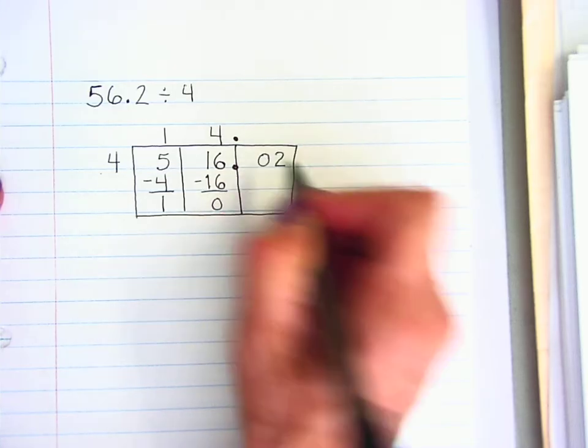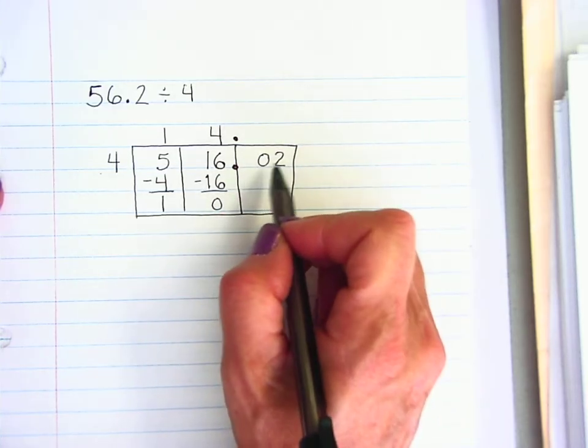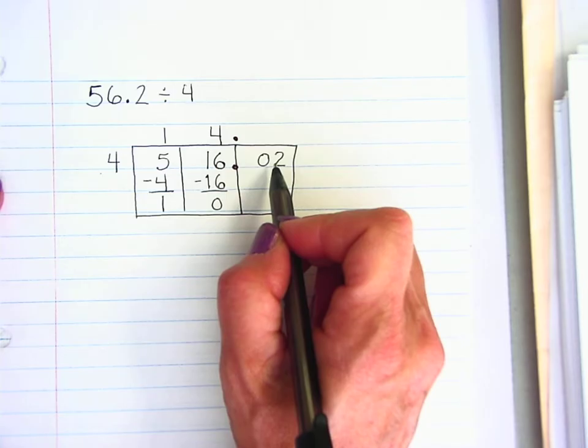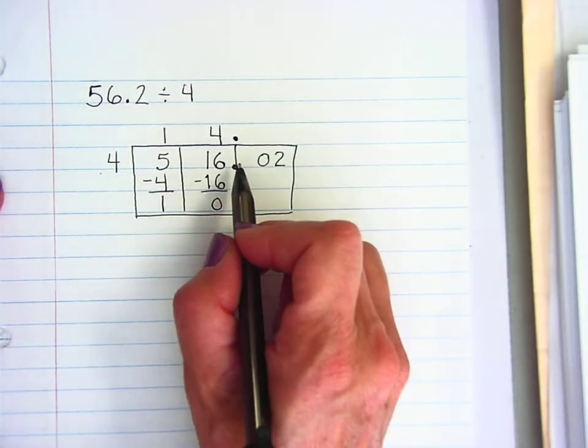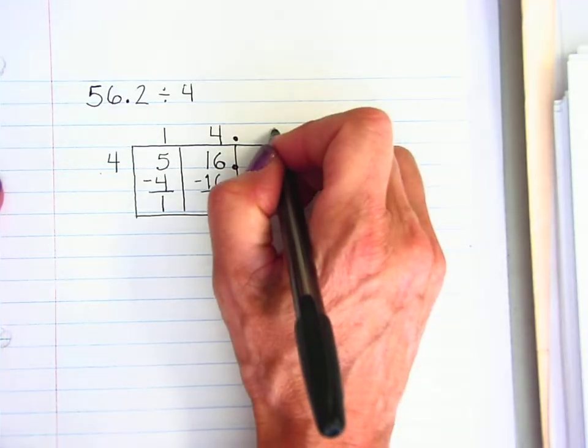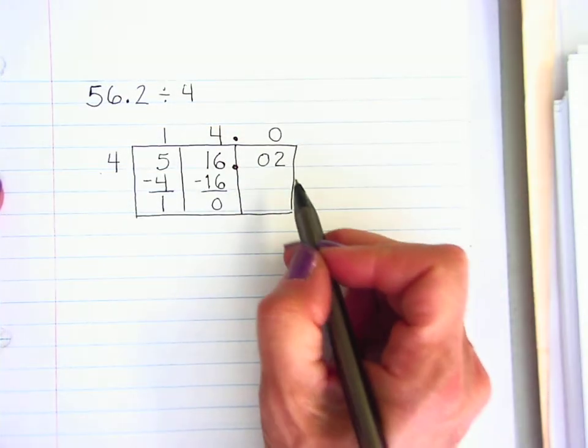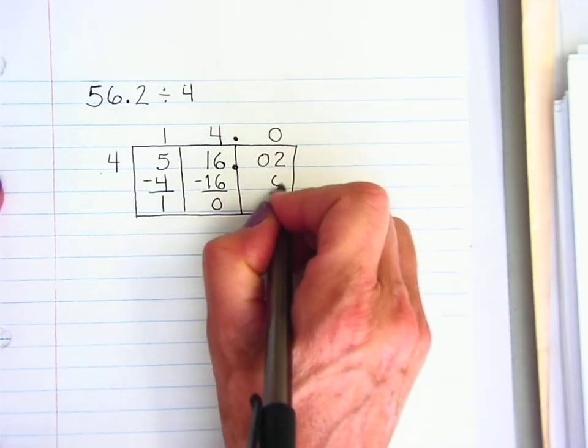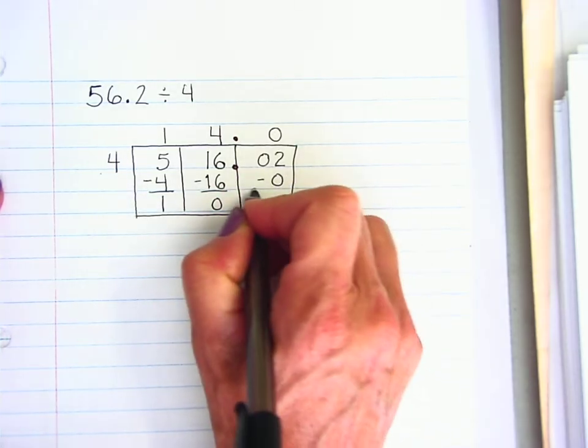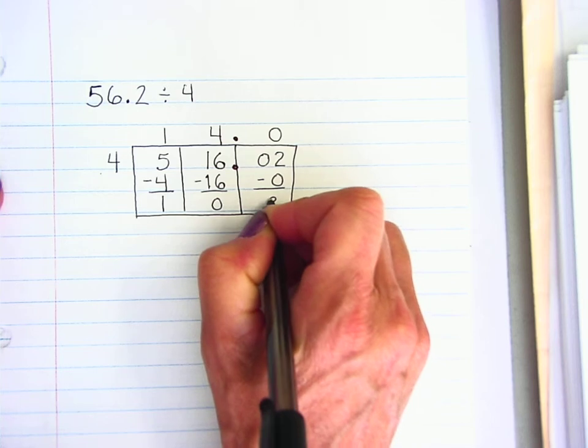I'm going to bring that 0 over and up. I now have 2. 2 is smaller than 4. That means 4 will not go into 2. I need to put a 0 above that box. When I multiply 0 times 4, I get 0. I subtract and I still have 2.